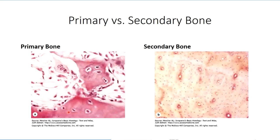A number of histological differences exist between this primordial bone and the secondary bone seen within the osteon. The collagen within primary bone is randomly deposited, resembling the organization of dense irregular connective tissue, whereas collagen within the concentric lamellae of the osteon is arranged in a spiraling pattern. Primary bone also has a lower mineral content and higher density of osteocytes than mature bone, and is much weaker, being rapidly replaced as bone development continues.